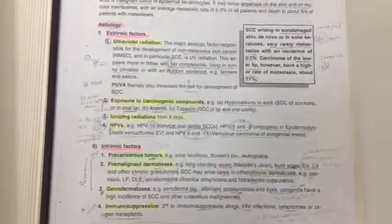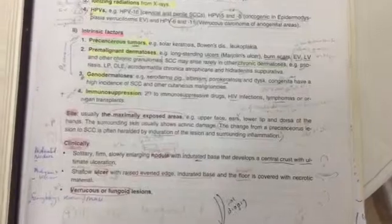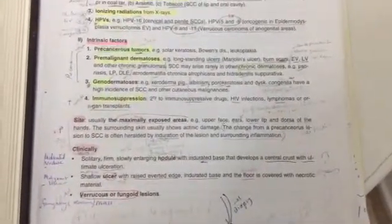The sites are usually in sun-exposed areas, especially upper face, ears, lower lip, and dorsum of the hand.